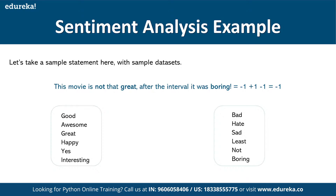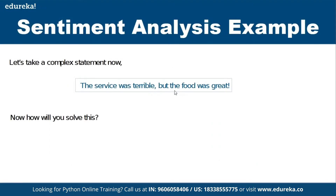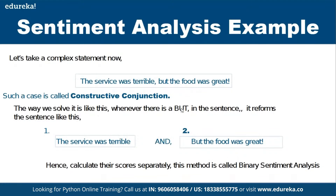Sometimes a sentence is like: 'The movie is not great; after the interval it was boring.' Here 'not' is a negative emotion (minus one), 'great' is positive (plus one), and 'boring' is negative (minus one). The total score is negative, so overall it's a negative review. For trickier sentences like 'The service was terrible but the food was great,' we use binary sentiment analysis — we split it into two sentences, score each independently, and decide the overall sentiment.